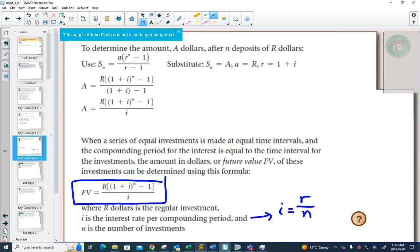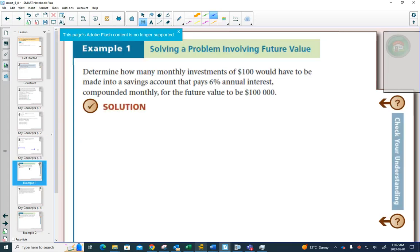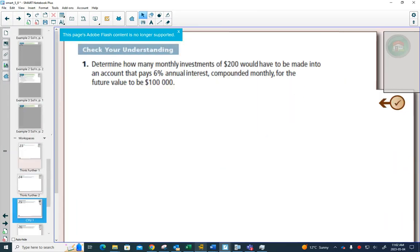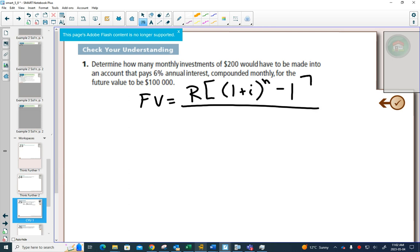So if we go to example 1 here, I'm going to rewrite out the formula for you guys. The future value is going to equal R, 1 plus I to the N minus 1 over I. And again, what you need to do is read the question, if you know what each of the things stand for, can you plug them in in the right spot?